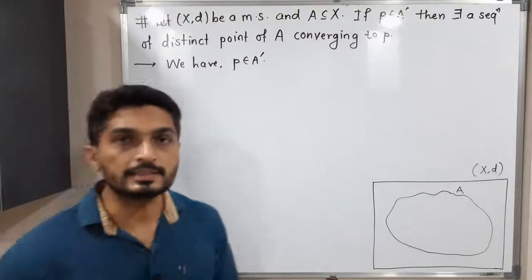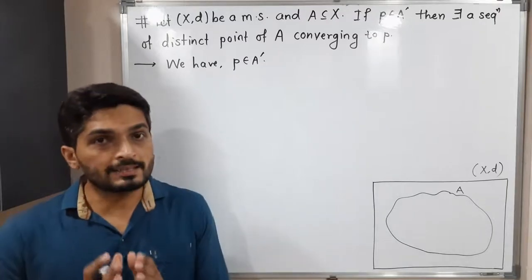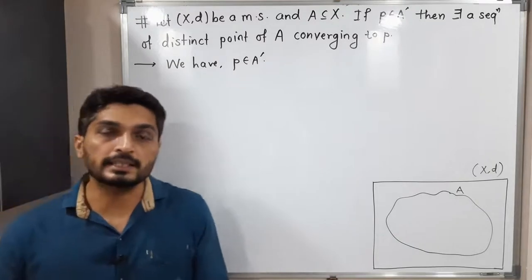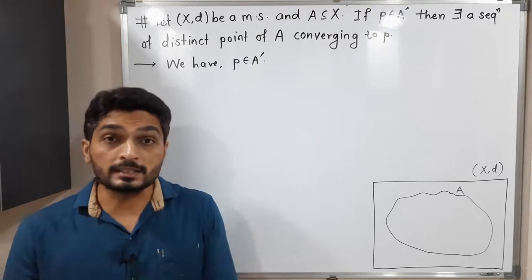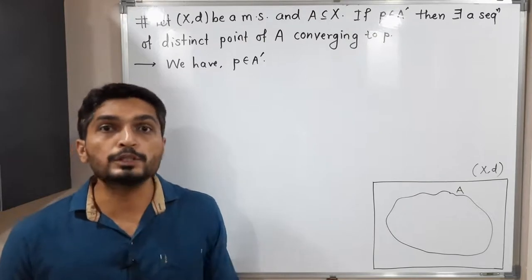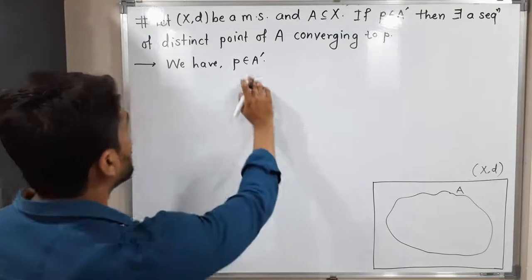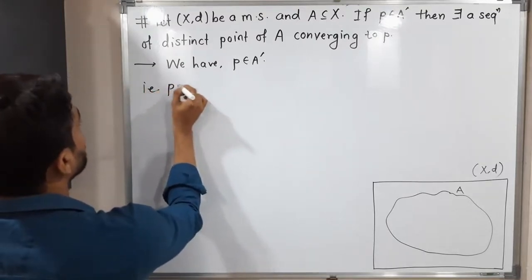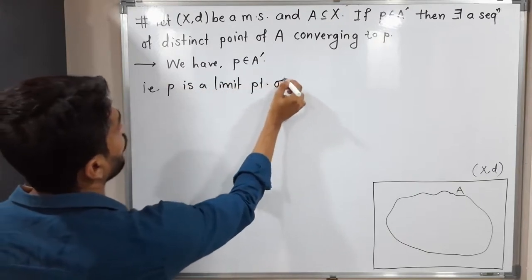Hi everyone, let us discuss this result. In this result, we have a metric space (X,d) and A is a subset of X. We have p belongs to A', meaning p is a limit point of A, and we have to prove that there exists a sequence of distinct points of A which converges to point p.